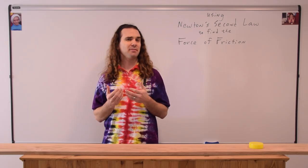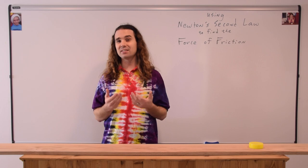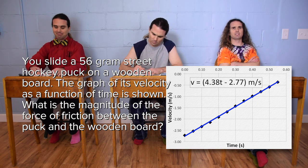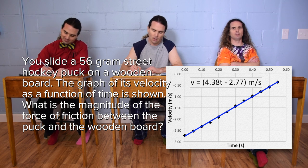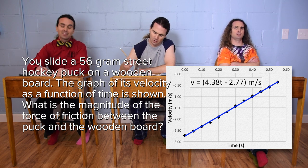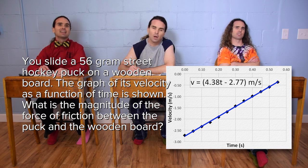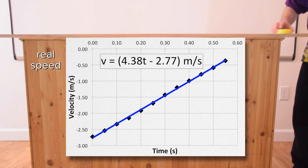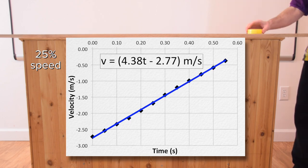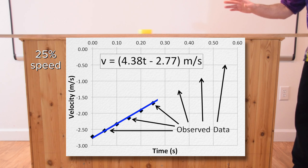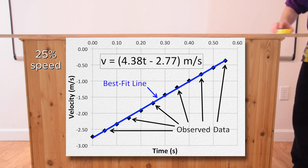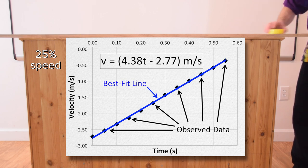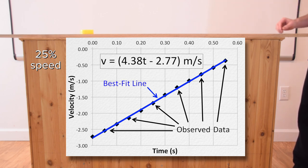I know we haven't specifically defined the force of friction yet. However, we can still find its magnitude. Bo, could you please read the problem? You slide a 56 gram street hockey puck on a wooden board. The graph of its velocity as a function of time is shown. What is the magnitude of the force of friction between the puck and the wooden board? To be clear, the black squares are the experimentally observed data and the blue line is a best fit line that best approximates and interpolates the data.